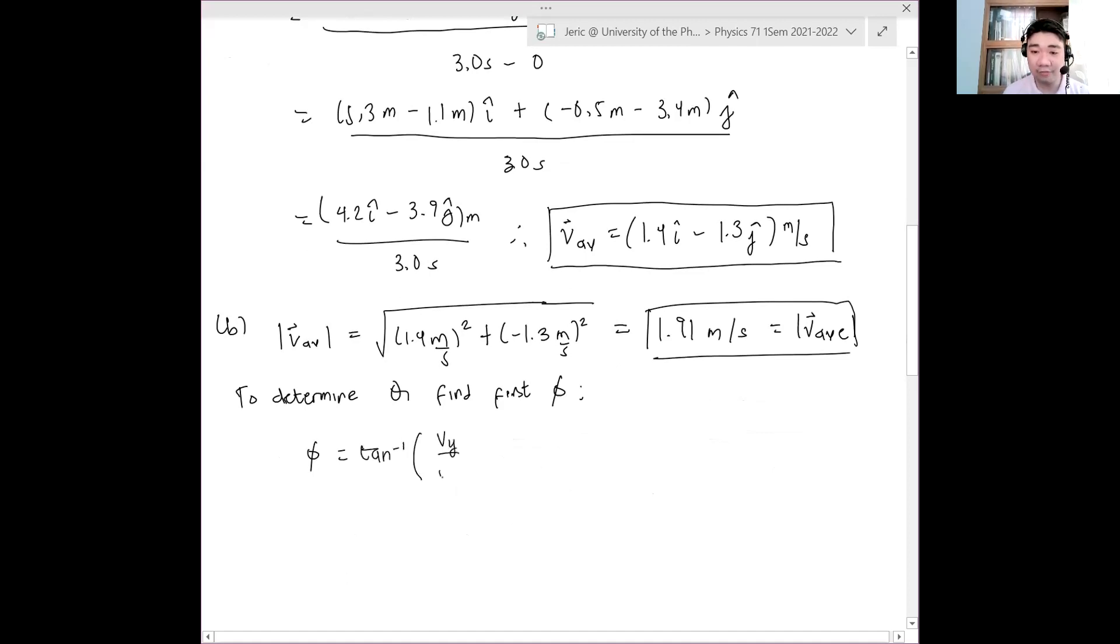This is just inverse tangent of Vy over Vx. I'll add absolute value bars. So we ignore all the signs. And we say that this is inverse tangent of 1.3 meters per second over 1.4 meters per second. The meters per second will cancel, of course. And this is about 42.9 degrees.